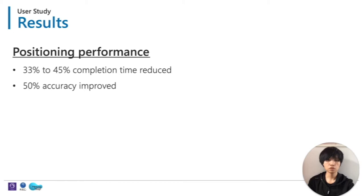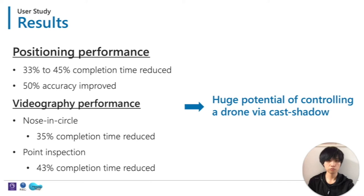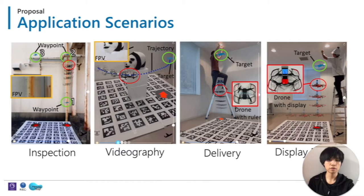Here are the results. For positioning performance, an average of 33% to 45% task completion time was reduced, and 50% operational accuracy was improved. For the circuit task, 35% task completion time was reduced. For the point inspection task, 43% task completion time was reduced. There is a huge potential for controlling a drone using a caster shadow. Examples of use include drone inspection, photography, delivery tasks, and the drone can also easily act as a display drone for a worker.